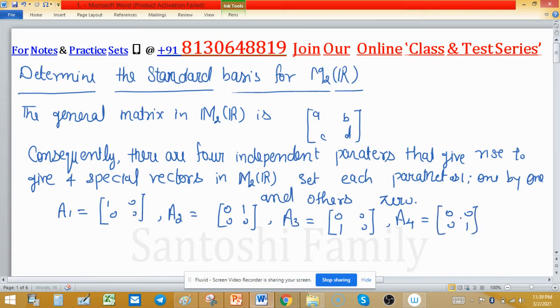These 4 matrices are normally called vectors because elements of a vector space are normally known as vectors, even though here the vectors are matrices of size 2 by 2.